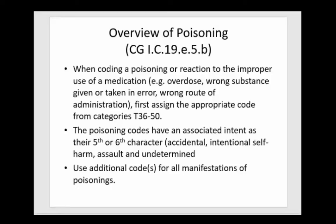When coding a poisoning or reaction to the improper use of a medication — that could be an overdose, the wrong substance given or taken in error, or the wrong route of administration — you're going to assign the appropriate code from categories T36 to T50. The poisoning codes have an associated intent as their fifth or sixth character, referring to whether the intent was accidental, intentionally meant to harm oneself or another person, or is undetermined.